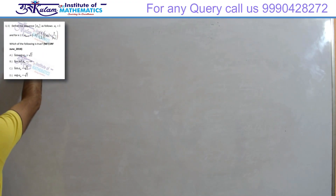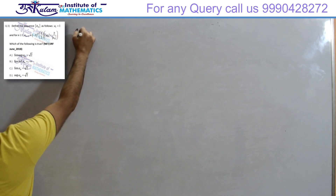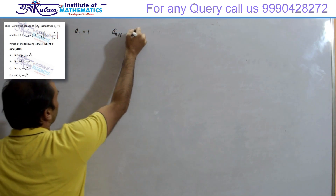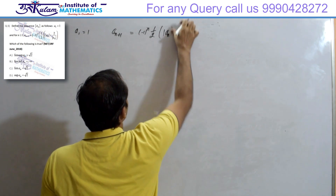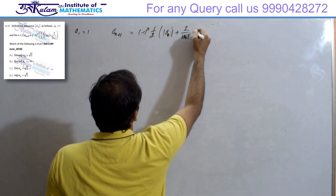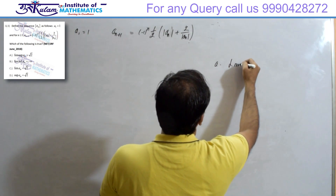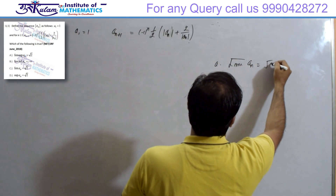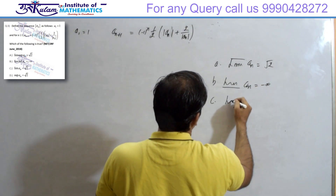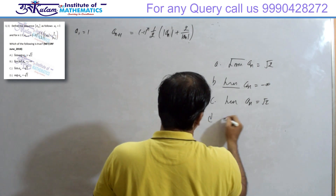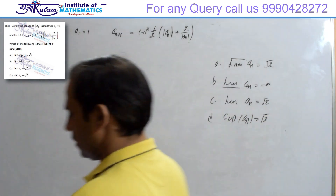This question is from June 2018. a1 is equal to 1, and a_{n+1} is defined as minus 1 to the power n times (1/2)(|a_n| + 2/|a_n|). The options are: (A) lim superior of a_n equals √2, (B) lim inferior of a_n is minus infinity, (C) limit of a_n is √2, and (D) supremum of a_n equals √2.